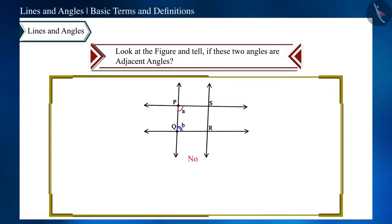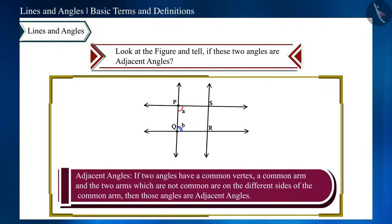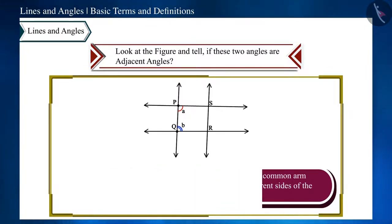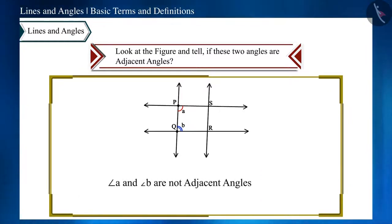These two angles have a common side, but the vertex of these two angles is different. But according to the definition of adjacent angles, it is necessary to have a common vertex of both the angles. Therefore, these are not adjacent angles.